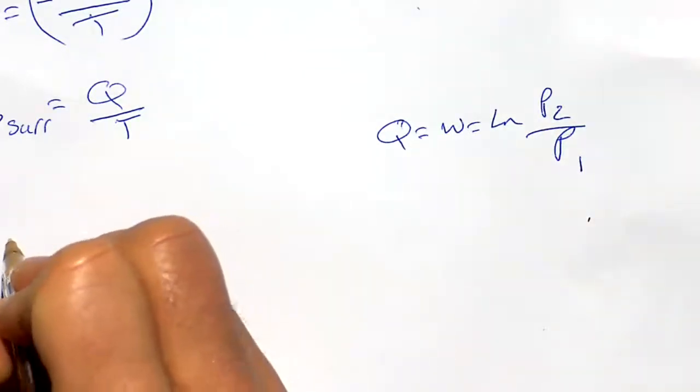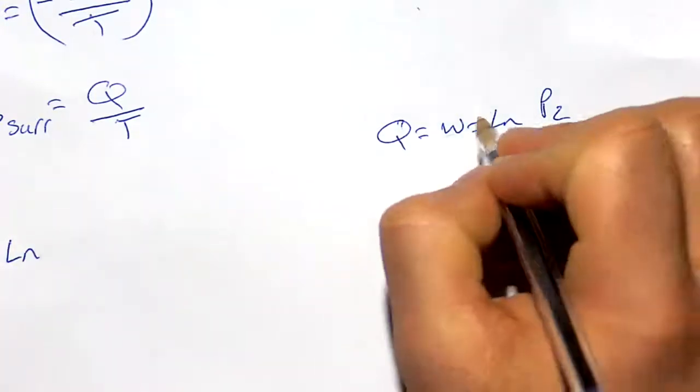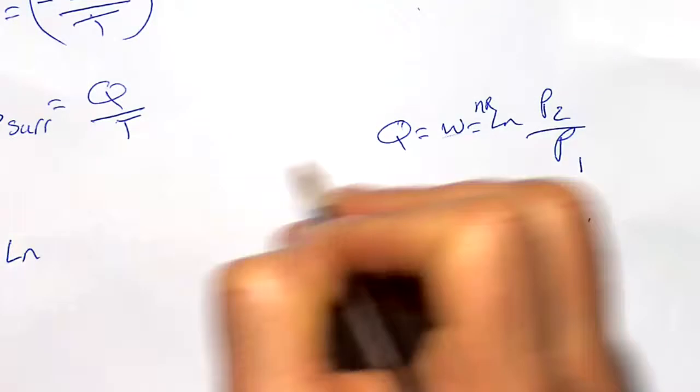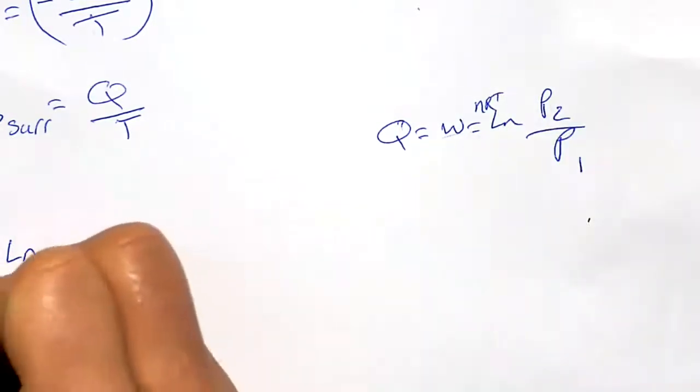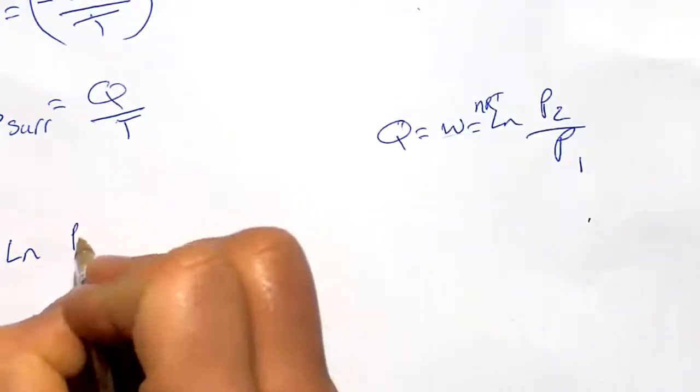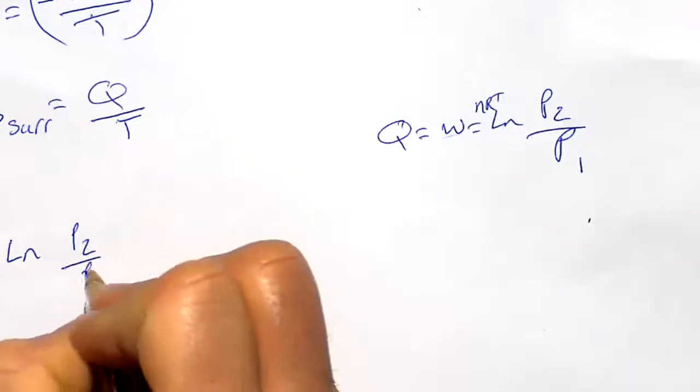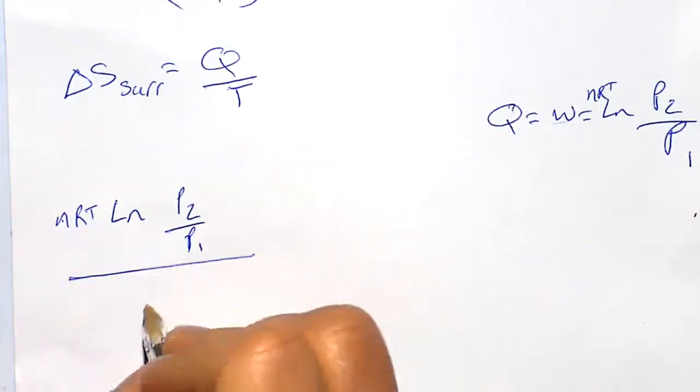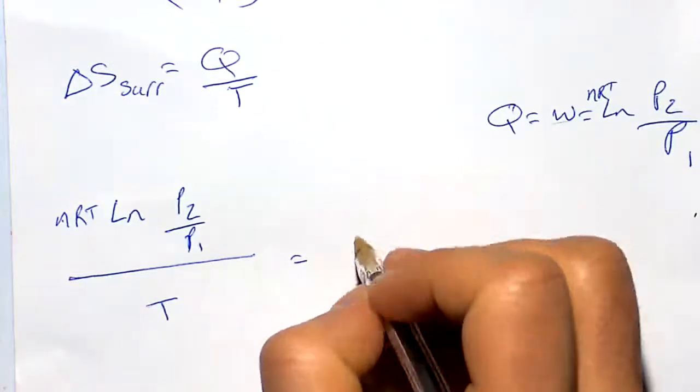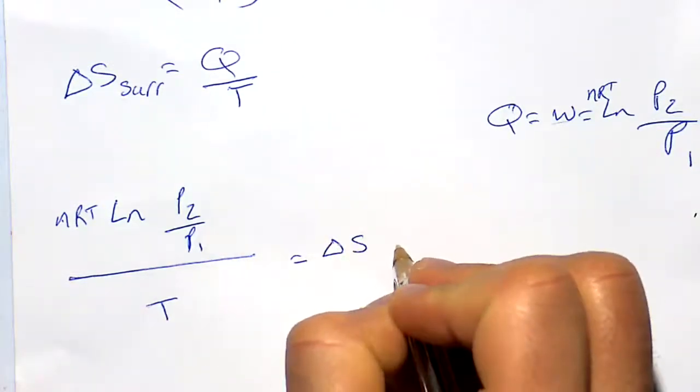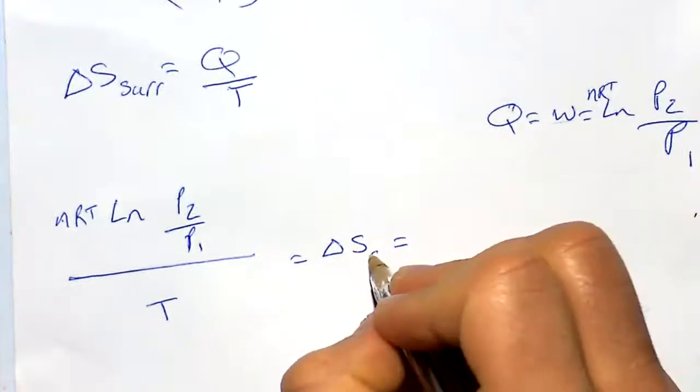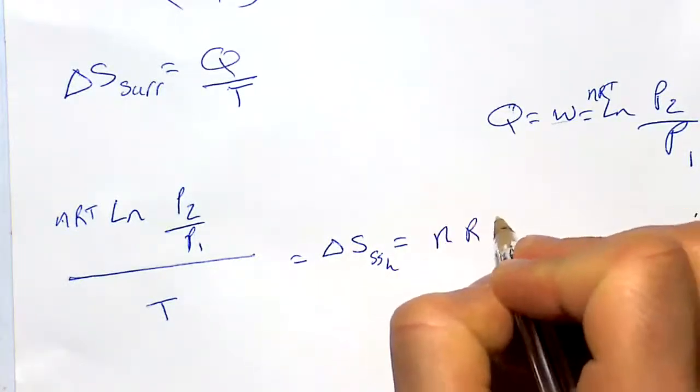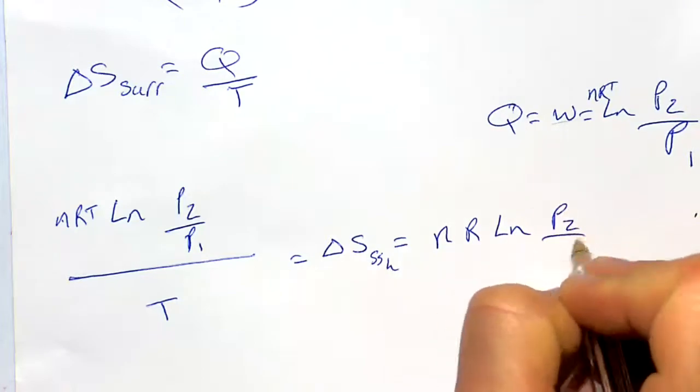So nRT log of P2 over P1 over temperature equals delta S of the surrounding, which equals nR log of P2 over P1.